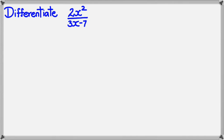So I want to differentiate this function here: 2x squared divided by 3x minus 7.